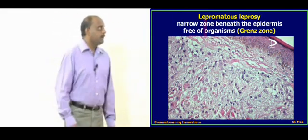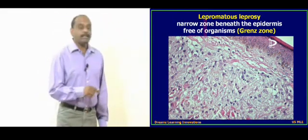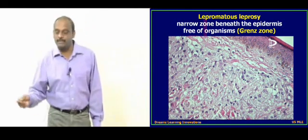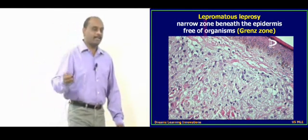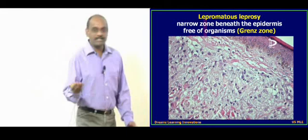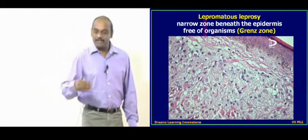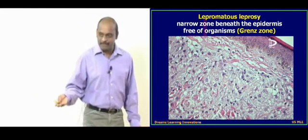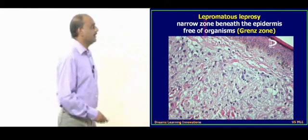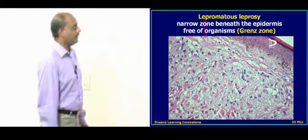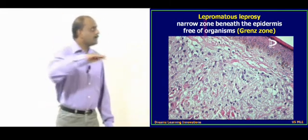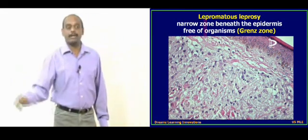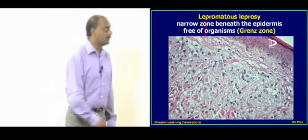In a leprosy skin biopsy — will you find organisms within the dermis or within the epidermis? Think about it: dermis, epidermis, epidermodermal junction, stratum corneum, stratum basale. There will be a narrow zone beneath the epidermis which is free of organisms — it is called the grenz zone.